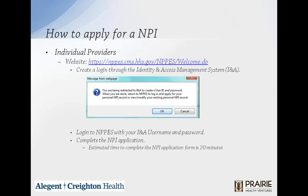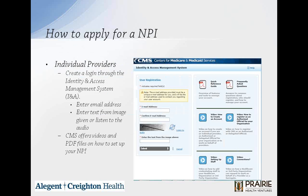You're going to create a login through the Identity and Access Management System. It's going to ask you to review or modify your existing personal NPI record. Completing this application, whether it's an individual provider or healthcare organization, takes about 20 minutes. You'll create a login by entering your email address and entering the text from the image given or listening to the audio. CMS does offer some really helpful videos and PDF files on how to set up your NPI in case you get stuck.